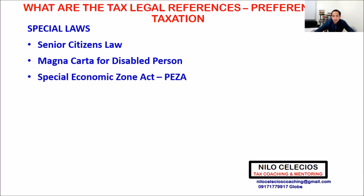Even if you start, if you choose the gross income tax of 5%, that's the computation. For the 5% PEZA income tax, 3% goes to the national government — the BIR, Bureau of Internal Revenue — and the remaining 2% is remitted to the LGU or local government where the PEZA company is located.